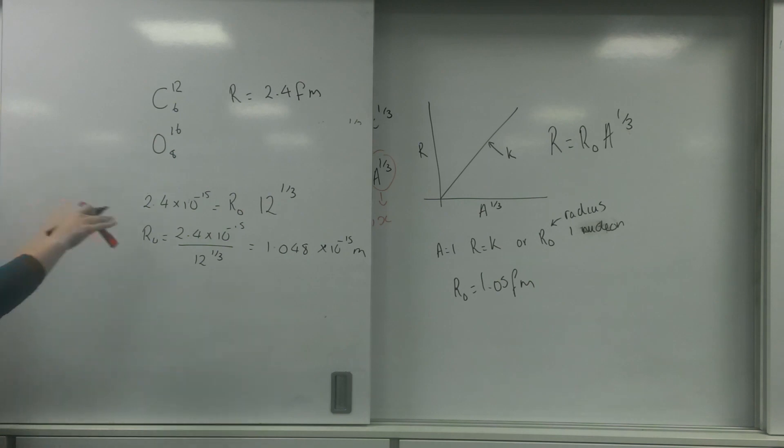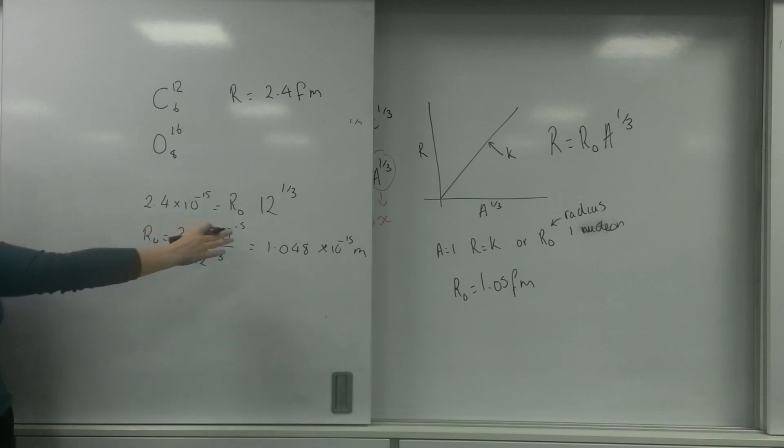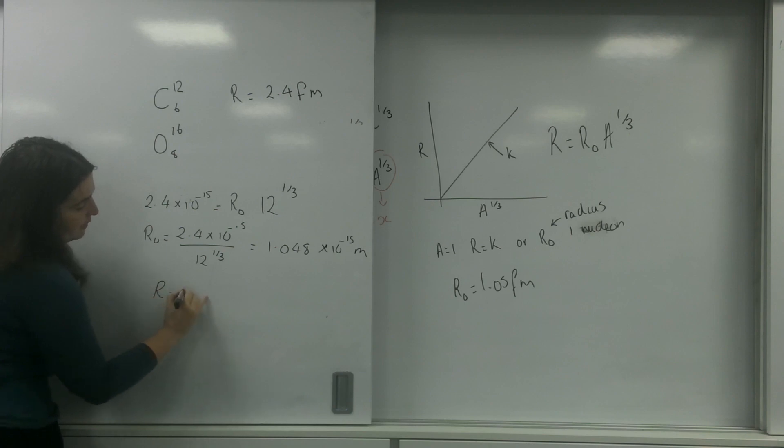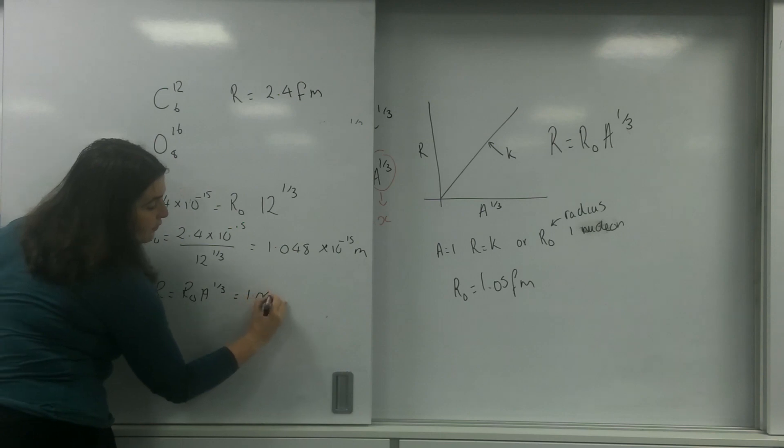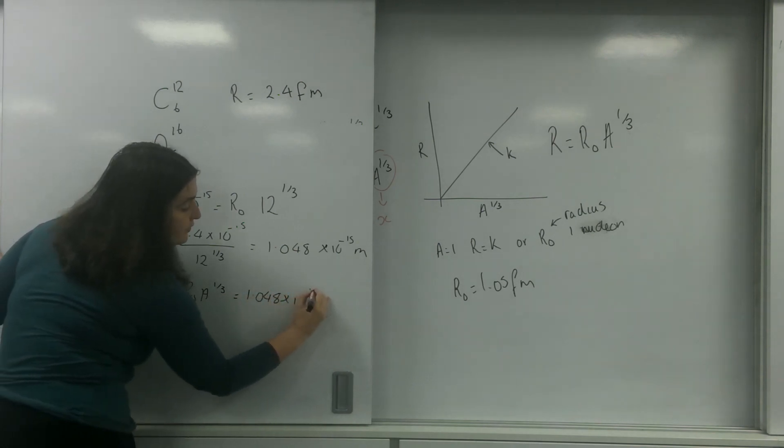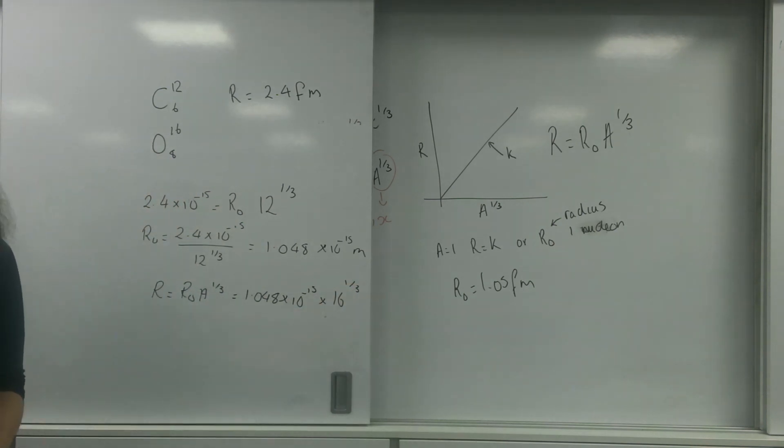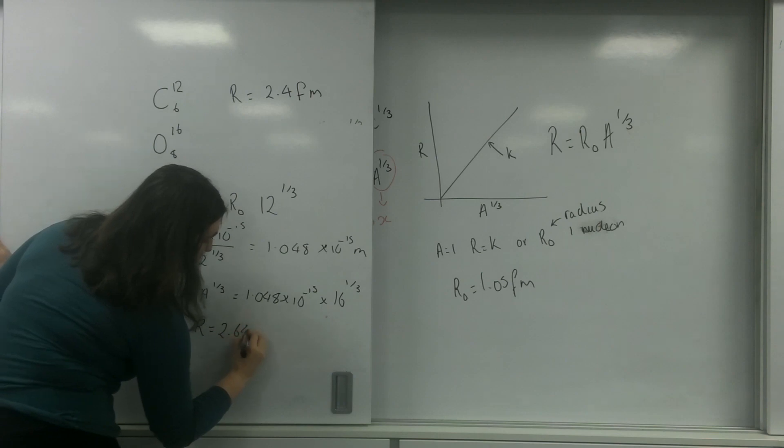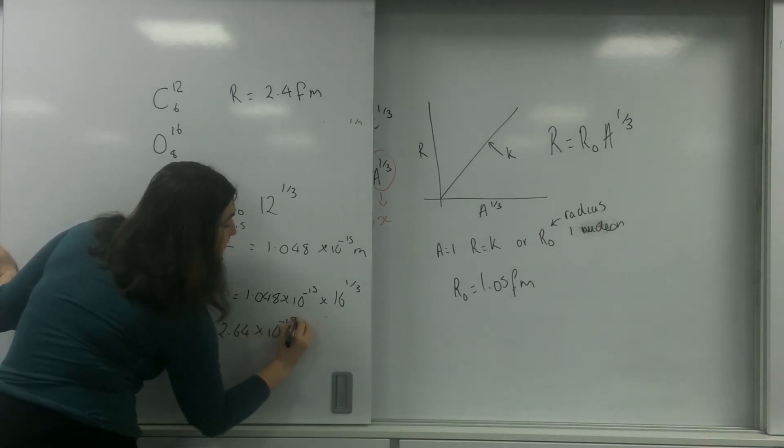So what I'm going to do now is use this information to find the radius of my oxygen here. So given that I know r naught, r equals r naught times A to the third. That is 1.048 times 10 to the minus 15 times 16 to the power of a third. So I get r is 2.64 times 10 to the minus 15 meters.